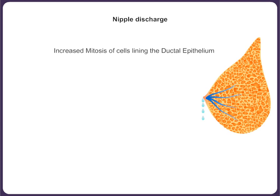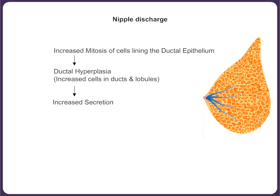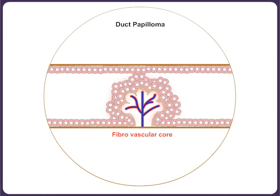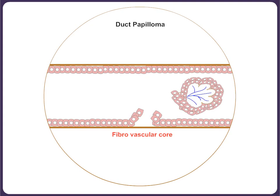Proliferation of the ductal epithelium leads to ductal hyperplasia, which may result in increased secretion, presenting as physiological nipple discharge in some ladies. Localized growth of cells within a dilated duct leads to papilloma formation. It has a central fibrovascular core and papillae lined by myoepithelial and luminal cells. Sometimes the papilloma may undergo infarction by torsion of the stalk, resulting in bloody nipple discharge.